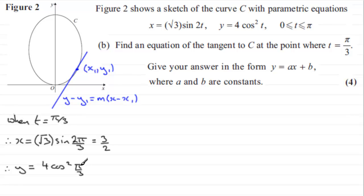Now the cosine of π/3 radians is 1/2. If you square it you get 1/4, and 1/4 times 4 gives you 1. So there's our x coordinate and our y coordinate.